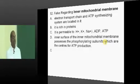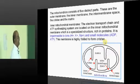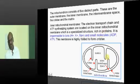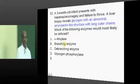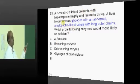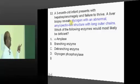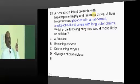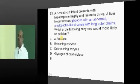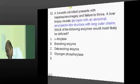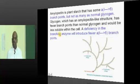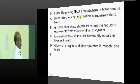The inner mitochondrial membrane is typically impermeable to H+, K+, Na+, and small molecules like ADP and ATP — that is what you have to fundamentally remember. Now, a three-month-old infant presents with glycogen and amylopectin-like structures whenever liver biopsy is done. A deficiency in branching enzyme is basically responsible for this glycogen storage disorder.